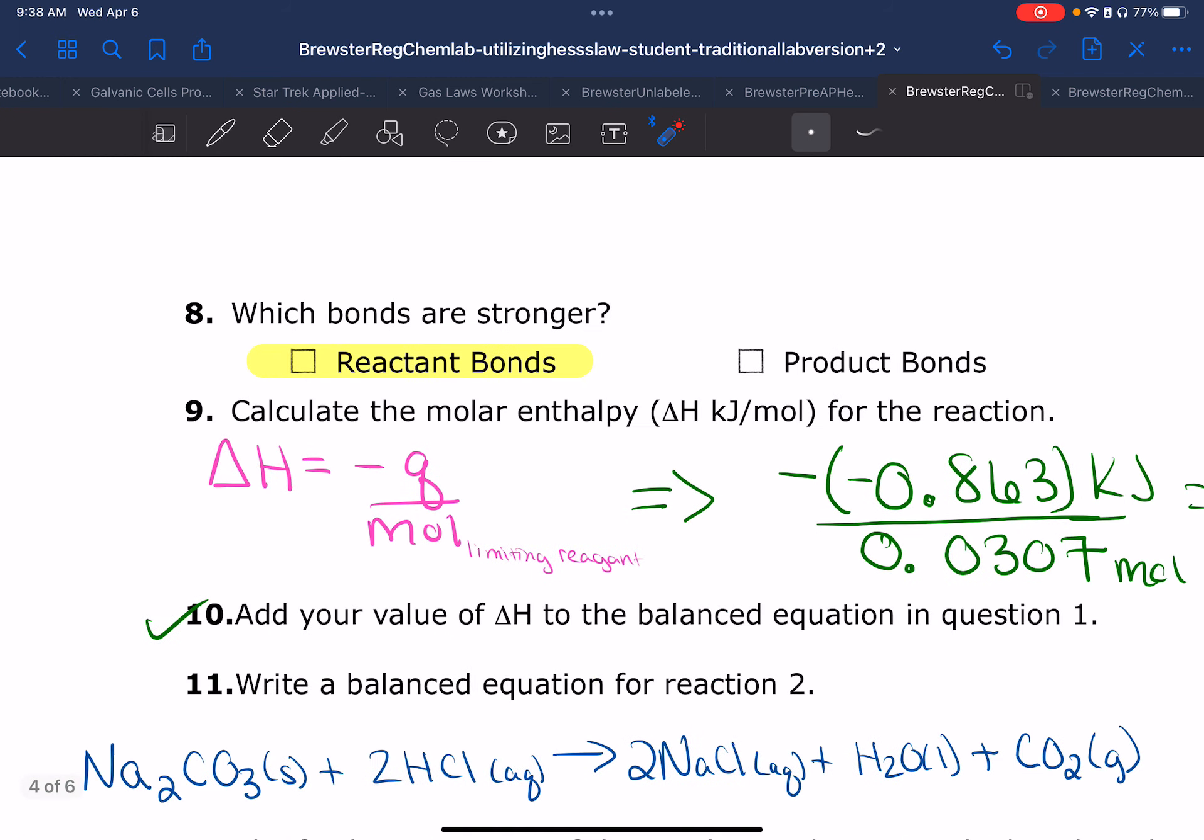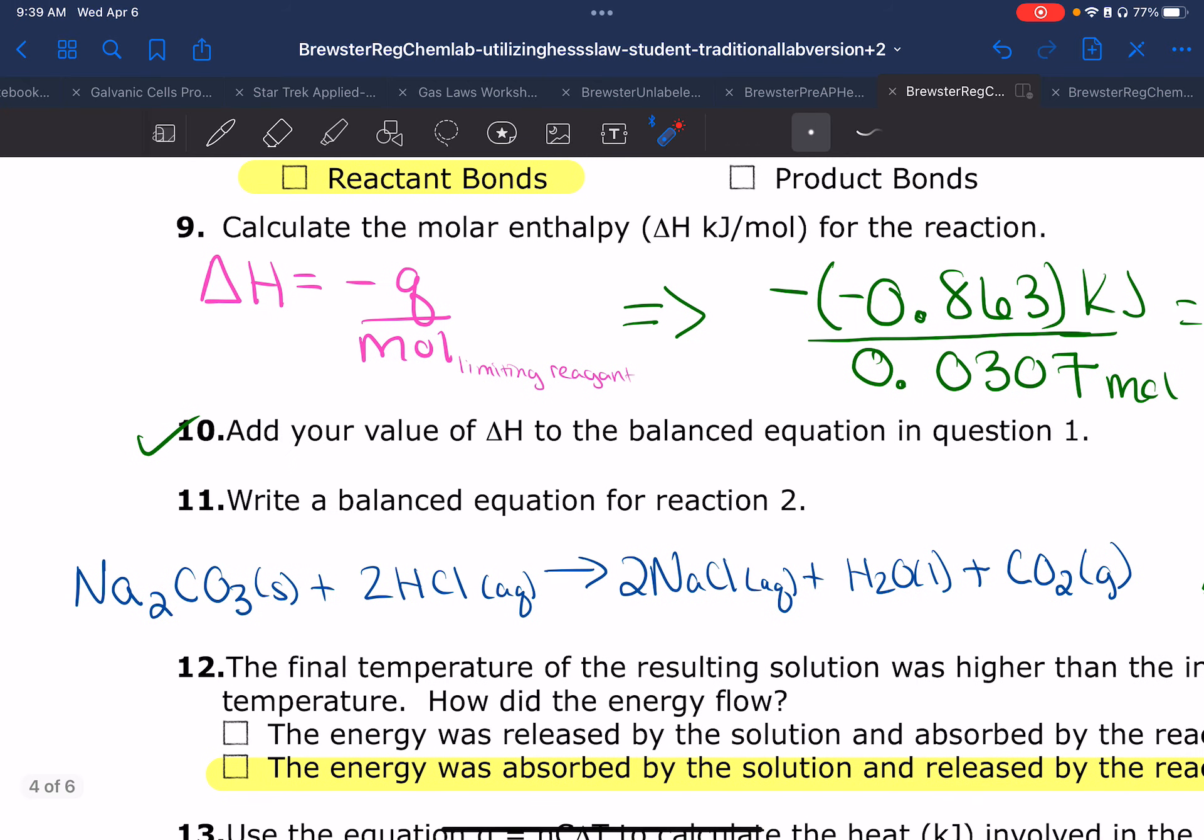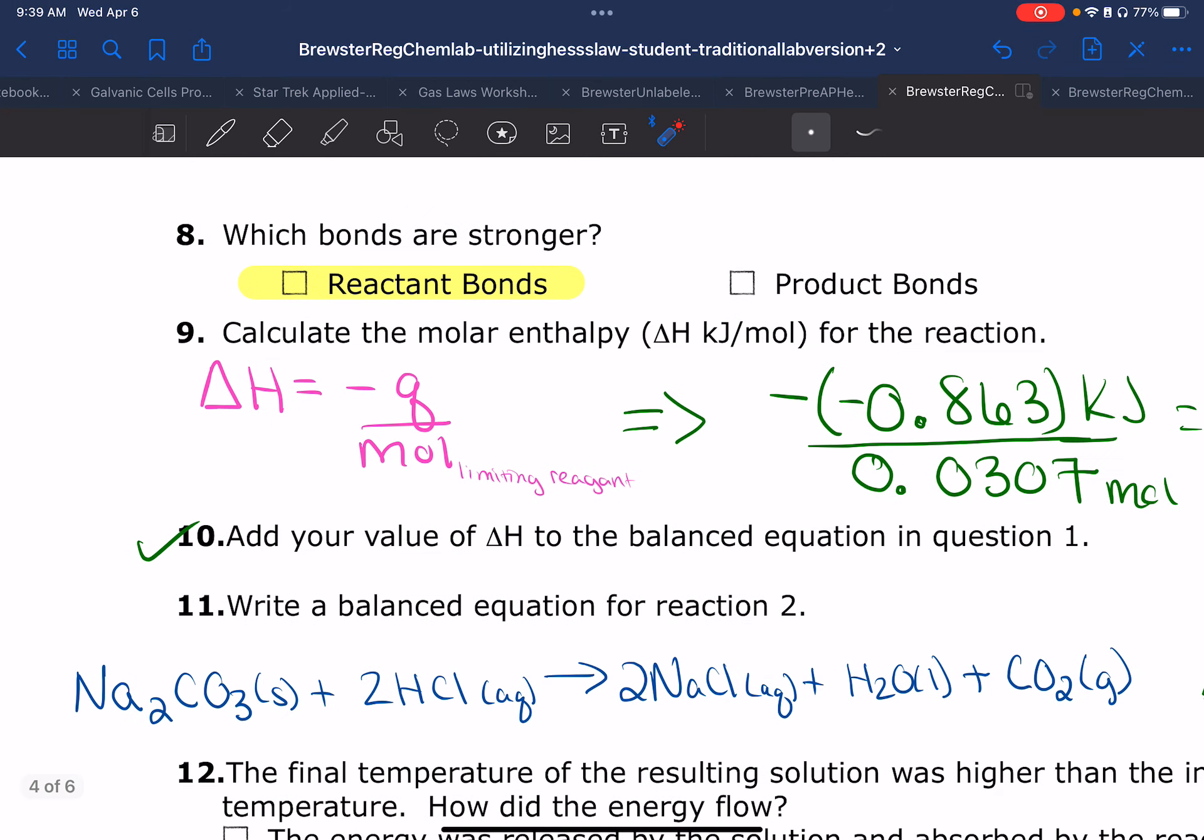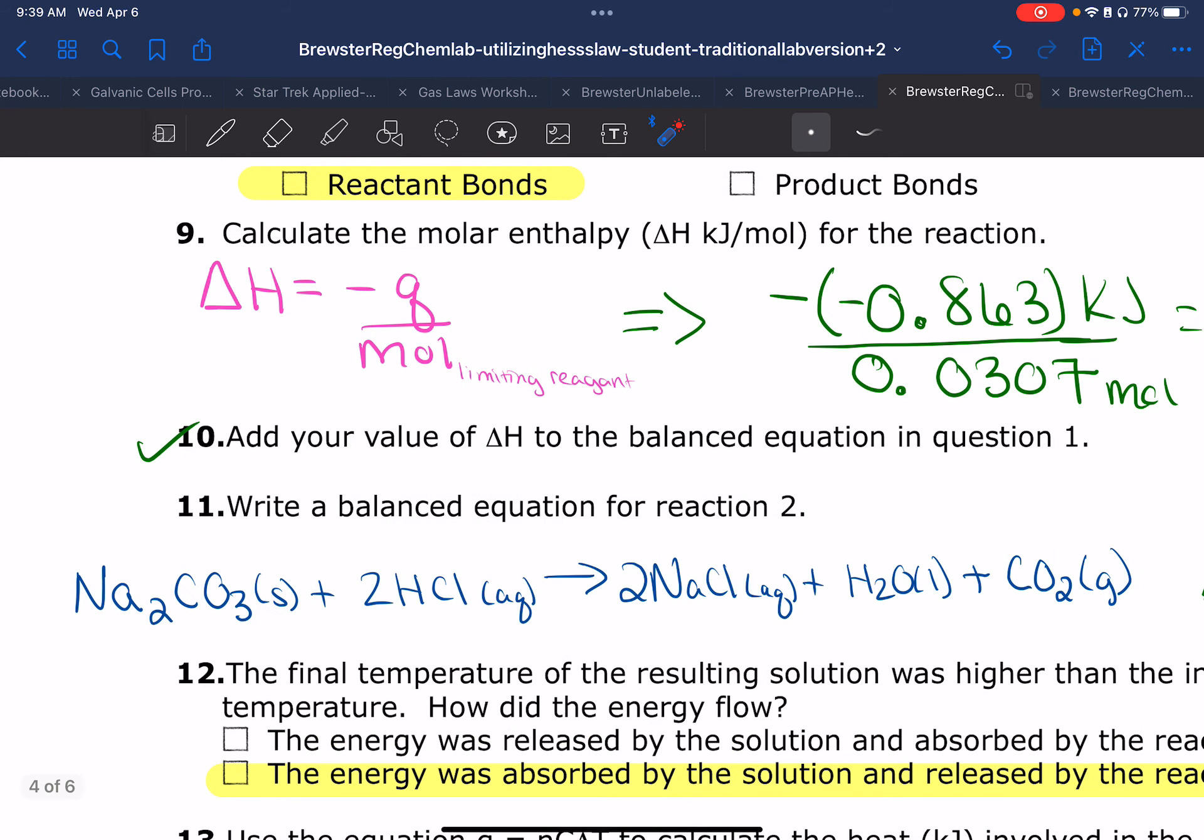On to the next reaction. Here is your balanced equation for reaction number two. Don't forget your states of matter. Then the question asks: the final temperature of the resulting solution was higher than the initial, so does this mean that it was absorbed by the reaction or released by the reaction? Well, hopefully you said that the energy was absorbed by the solution but released by the reaction.